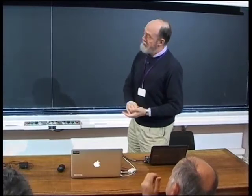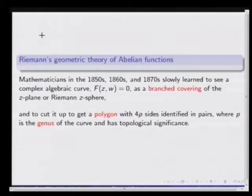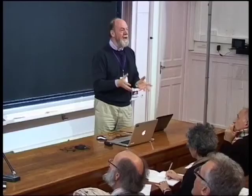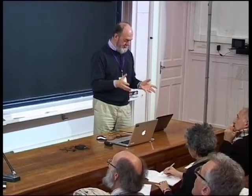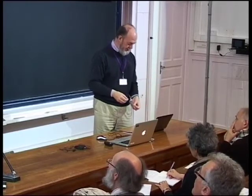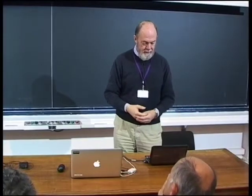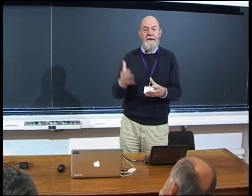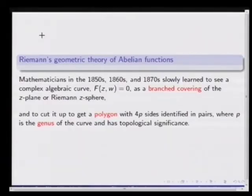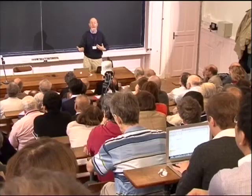Back to Riemann for a moment. Riemann had discussed branched covers of the sphere and how branched coverings of the sphere are related to algebraic curves. That's the story that mathematicians then tried to understand after Riemann's work — how you could have an algebraic curve that's a polynomial in Z and W, realize it as a branched covering of the Z-plane or the Riemann sphere, cut it up in the fashion we cut up the torus before, and obtain a 4P-sided polygon if the genus of your curve is P.